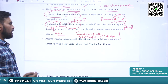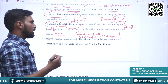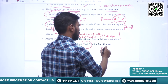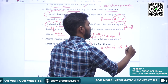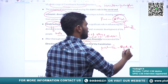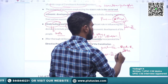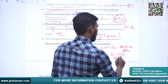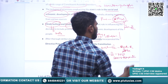The Constituent Assembly decided to incorporate the directive principles in Part 4 of the Constitution. Part 3 covers fundamental rights, which ensure political justice. Part 4, DPSP, ensures social and economic justice.